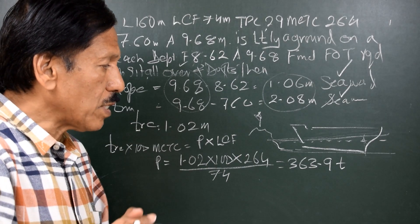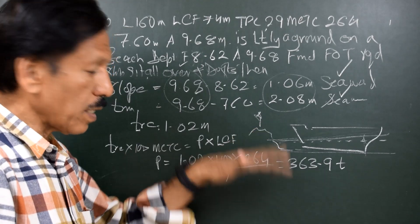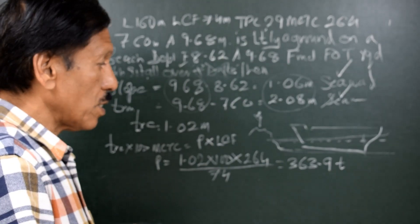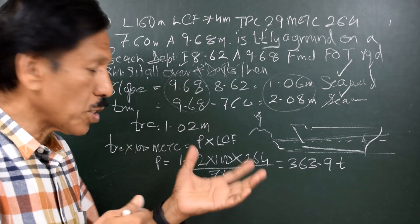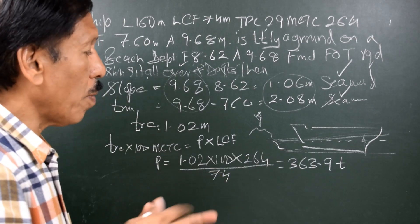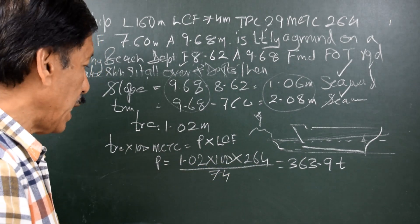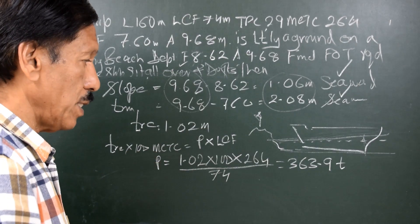Now, the vessel throughout this period from initial touching till the final settling down remains pivoted and this is a situation which is similar to dry docking. So the first ever formula in such a situation is P into LCF is equal to trim change into 100 MCTC.